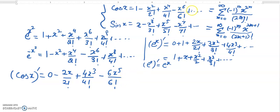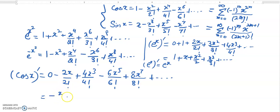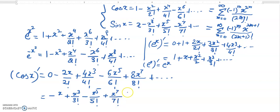The next term will involve x^8, so it will be plus 8x^7 over 8 factorial, and so on. Simplifying: minus 2 over 2 factorial gives minus x; 4 over 4 factorial gives 3 factorial in the denominator giving x cubed over 3 factorial; then minus x^5 over 5 factorial; and the last term x^7 over 7 factorial.